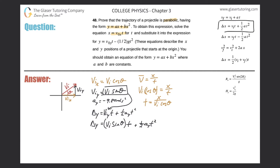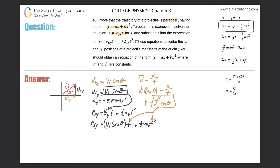Why did I solve for time from the x equation? Because I can now substitute that time value into my y equation. These times are equal — time knows no dimension, it's not an x-coordinate or y-coordinate, it's just time. So I'm going to substitute the time expression in to get an equation with only x and y variables in it.